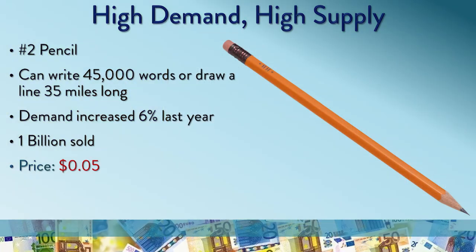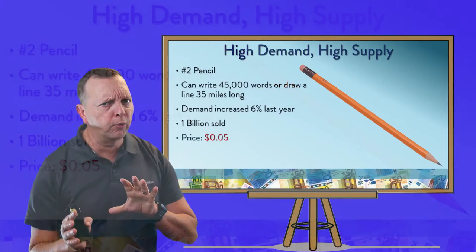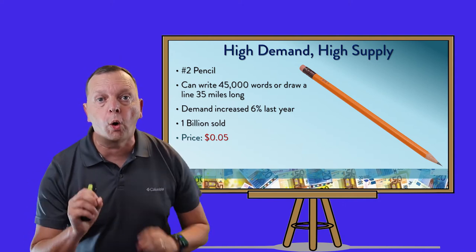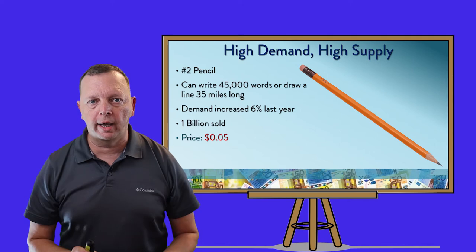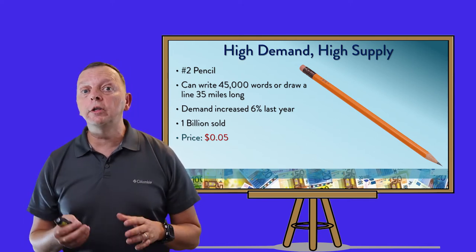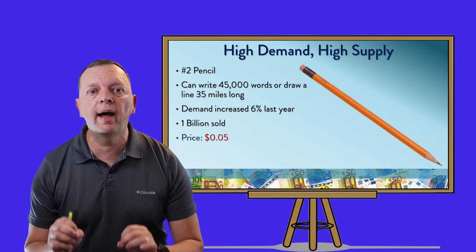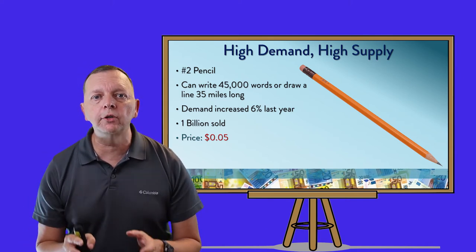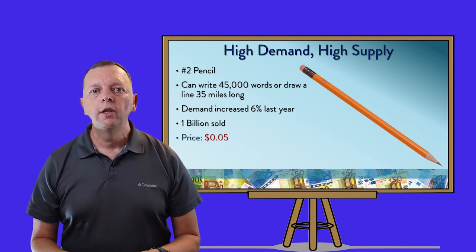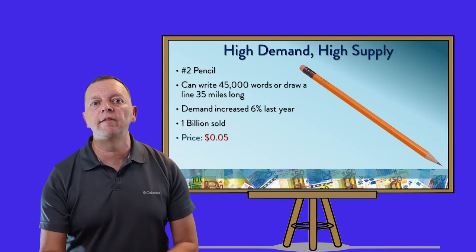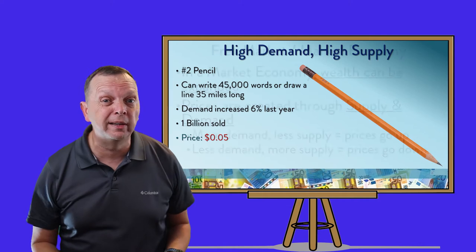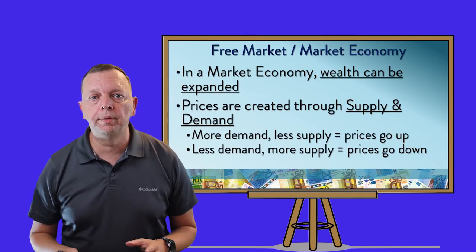However, then there is the number two pencil. It is really remarkable — with a pencil, you can write 45,000 words or draw a line 35 miles long. Now, it also has a great demand; in fact, last year, demand for pencils went up by 6%. However, there is a great amount of supply — over 1 billion pencils are made and sold every year. So because you have demand but a much higher supply, the price is very low. In this case, you can get a pencil for about a nickel. This is an example of supply and demand.